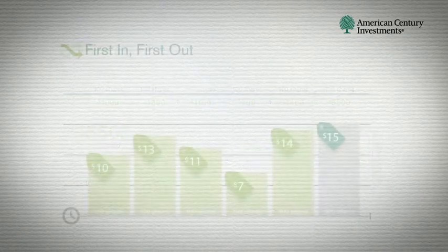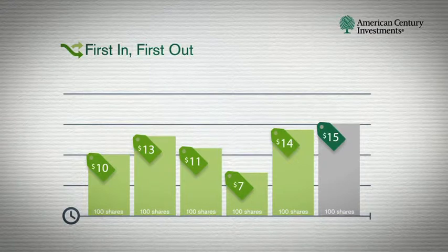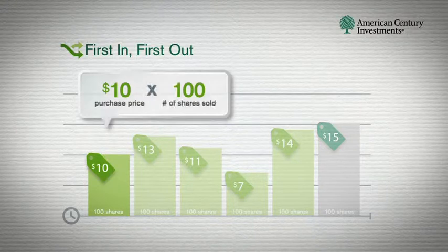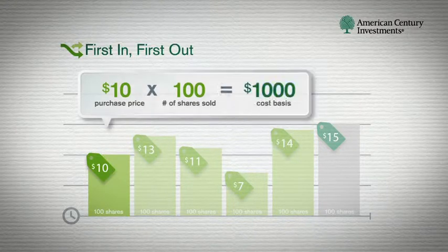Now let's use the same purchases with the first in, first out method. Here, you assume the first shares purchased are the ones you're selling. In this case, that's $10 a share, multiplied by the 100 shares you are selling. Your cost basis is $1,000.